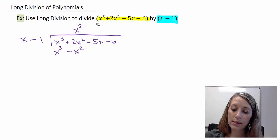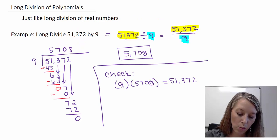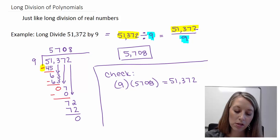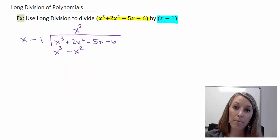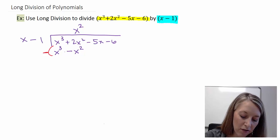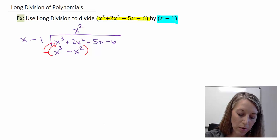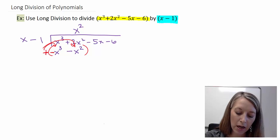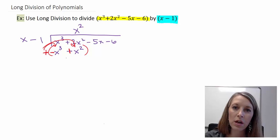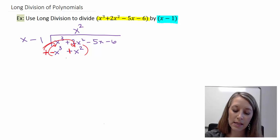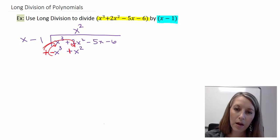Now we do the same thing as before — we subtract our two values. But be very careful because we are subtracting everything in this group. So instead of writing it as a subtraction, I distribute my negative through: I make this a plus, make this a subtraction, and change my signs. So instead of actually subtracting, I switch my signs and add. It's a little bit easier that way so we don't get any signs lost in the process.